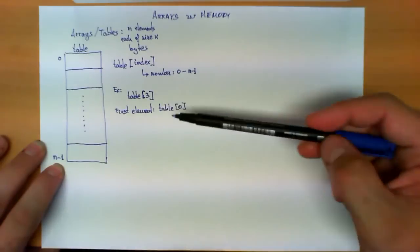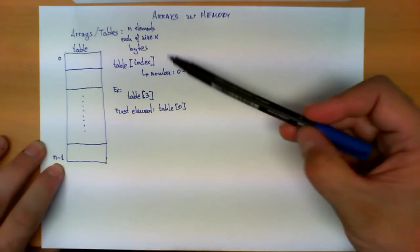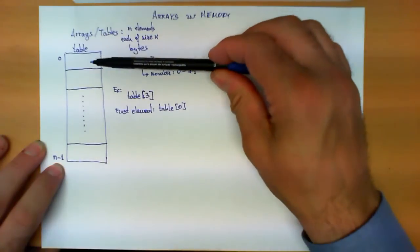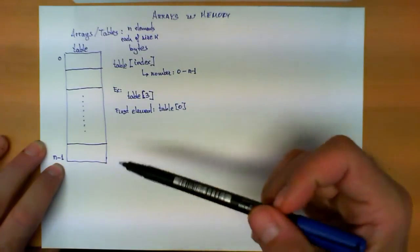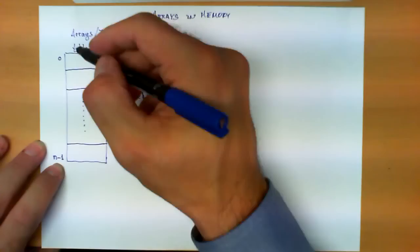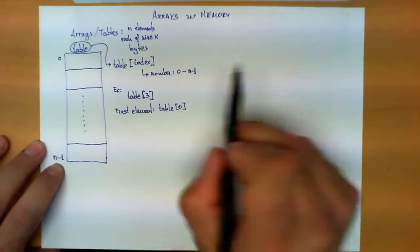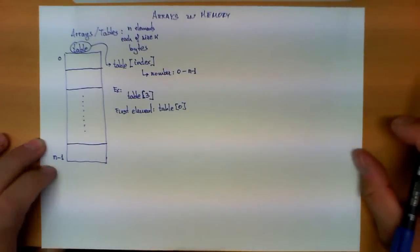Basically what this data structure allows us is to have a collection of elements, all of them of identical size, so they're all the same type, one stored next to the other, and refer to them using the name given to this table, followed by what we call the index.